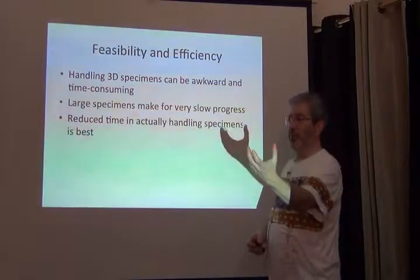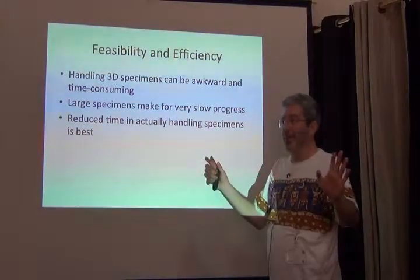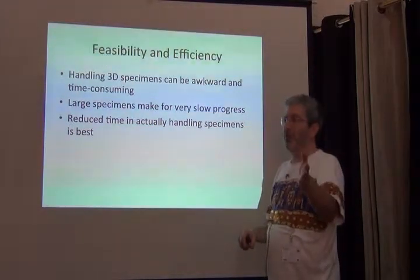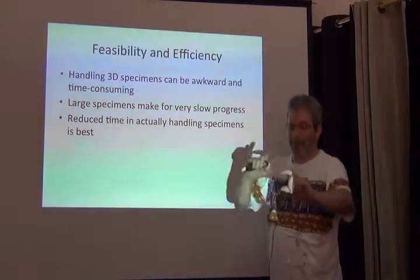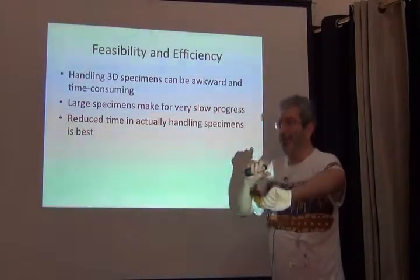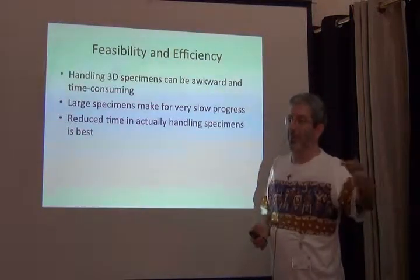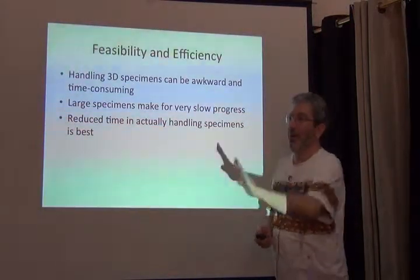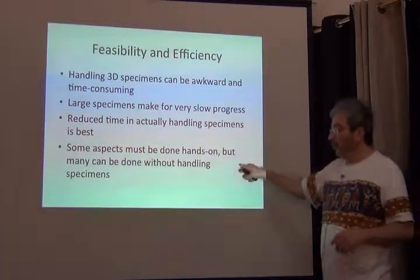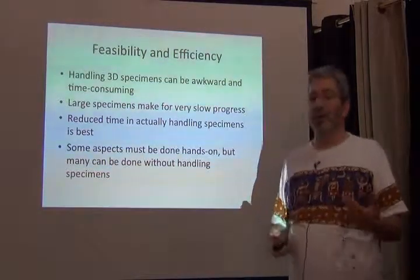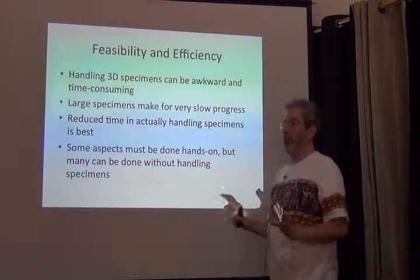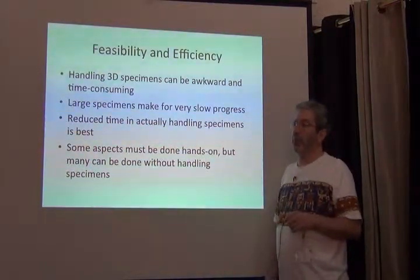Versus: pick up the specimen, take a picture — probably not a complex image, just a picture to get the general form — and then photograph the front side of label one, back side of label one, front side of label two, back side of label two. Stop. Put it back in the tray and move on. Some aspects of the process we have to do hands-on, and other parts we can do based on electronic images.